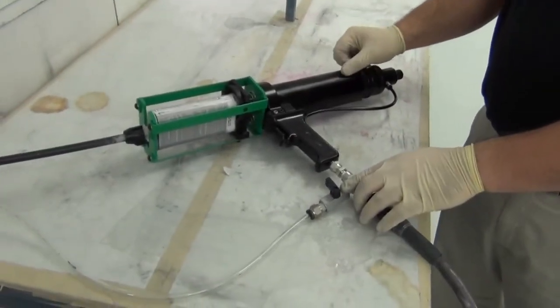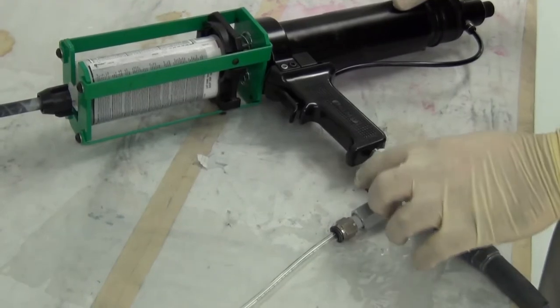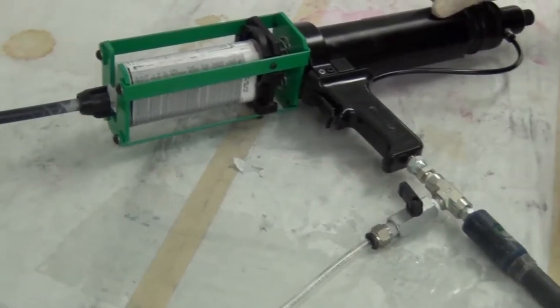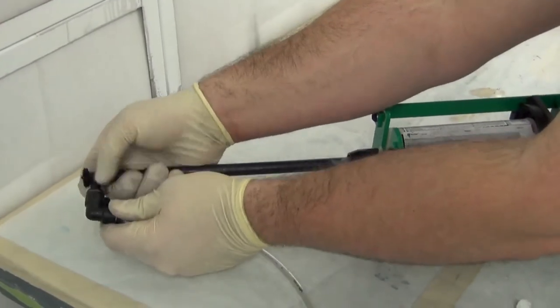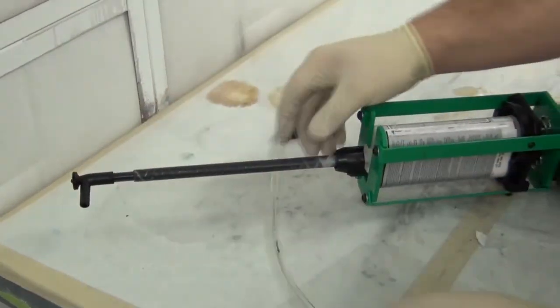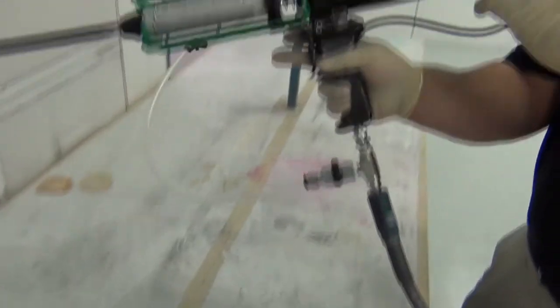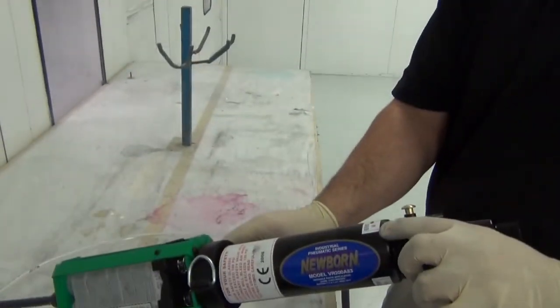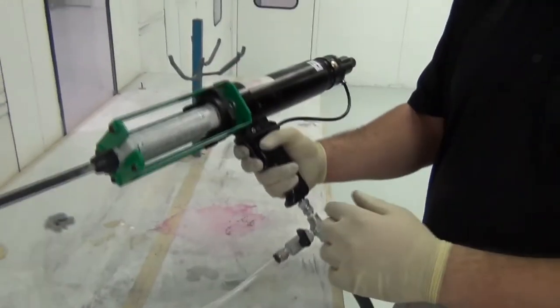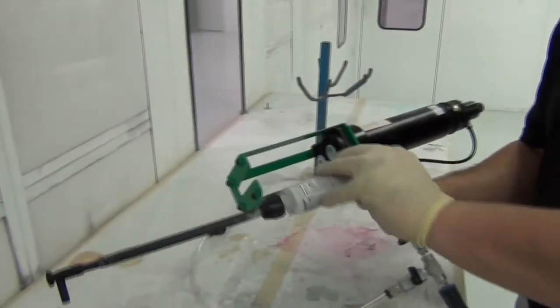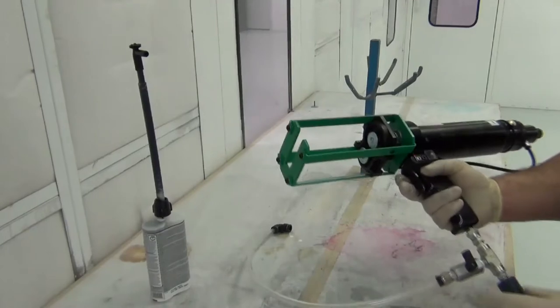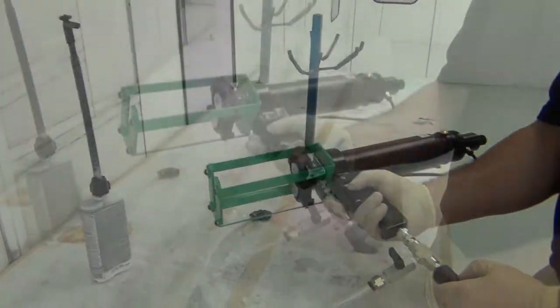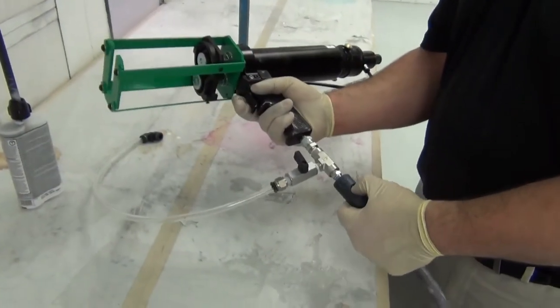When you're done spraying, you'll want to move the valve back to the off position, which again is the vertical position. To disconnect the elbow joint, you'll want to push down on it and push it off of the tip. Then you'll want to pick up the gun and push it back to reverse air. So that way as you pull the trigger, it'll pull the plungers back as opposed to pushing more material. We can leave the tip on for storage purposes and then disconnect the airline from the gun.